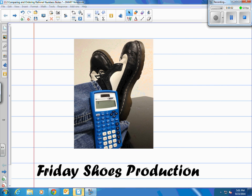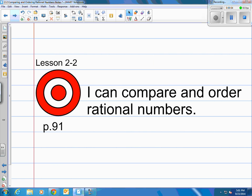This is a Friday Shoes production. Follow along in the book, Lesson 2-2, on page 91. Target is, I can compare and order rational numbers.